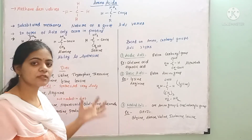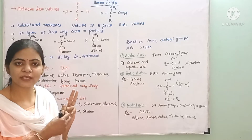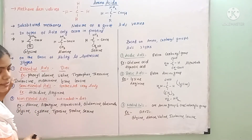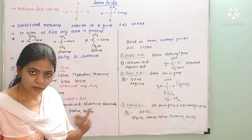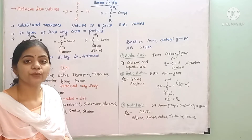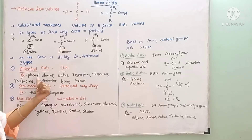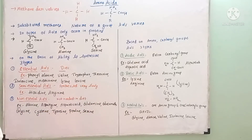Based on the ability to synthesize amino acids, they are classified into three types: essential, semi-essential, and non-essential amino acids. Essential amino acids are not synthesized by our body — they are necessary but must be supplied through the diet. Examples are phenylalanine, valine, tryptophan, threonine, isoleucine, methionine, lysine, and leucine — these eight are the essential amino acids.